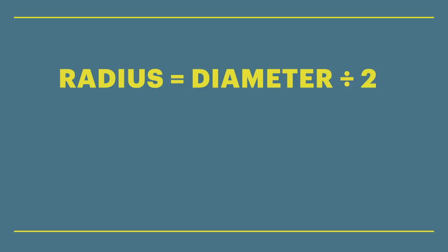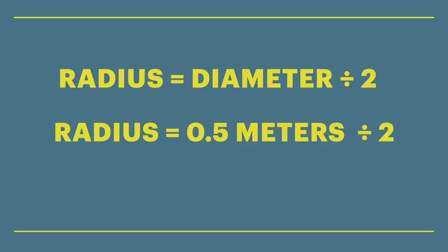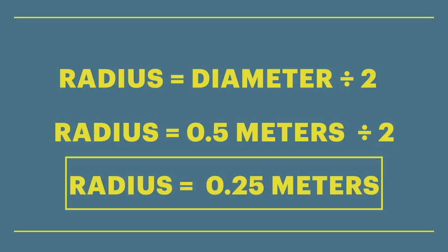So a radius is equal to the length of the diameter divided by 2. In our situation, the radius is equal to 0.5 meters divided by 2, and that is equal to 0.25 meters.